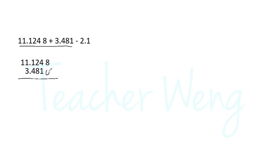Let us add a zero to avoid confusion. Eight plus zero is eight, four plus one is five, eight plus two is ten — carry one. Four plus one plus one is six. Copy the decimal point. One plus three is four, and bring down one. The sum is fourteen and six thousand fifty-eight ten-thousandths.